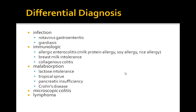For the differential diagnosis, you want to rule out things like rotavirus, giardiasis, other causes of diarrhea, allergic enterocolitis, and food allergies such as milk protein allergy, soy allergy, and rice allergy. Causes of malabsorption such as lactose intolerance, tropical sprue, Crohn's disease, pancreatic insufficiency, and lymphoma should also be considered.